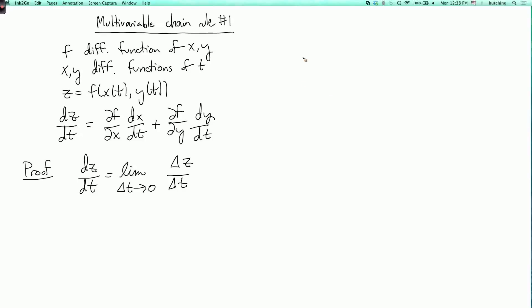Where here delta z means z of t plus delta t minus z of t. So it's the net change in z. Now, since z is a differentiable function, then the definition of differentiability says that this delta z is fx times delta x plus fy times delta y plus these error terms, epsilon 1 times delta x plus epsilon 2 times delta y. So that's delta z, and then we divide this whole thing by delta t.